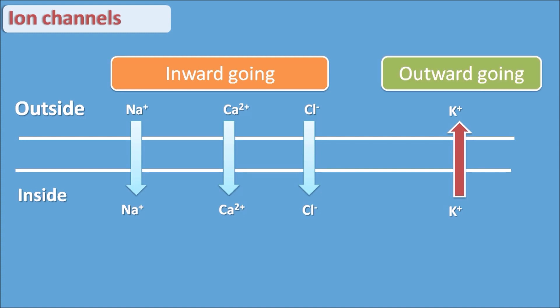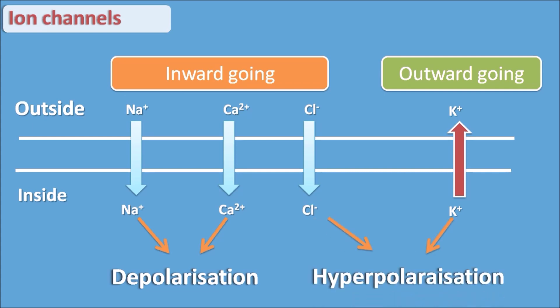On the other hand, potassium ion channels are going outside the membrane, so we call them outward-going potassium channels. Among these four ion channels, sodium and calcium enter into the cell and produce depolarization. Chloride and potassium produce hyperpolarization. Chloride, even entering the cell, produces hyperpolarization because it is negatively charged. So sodium and calcium are responsible for depolarization, and chloride and potassium for hyperpolarization.